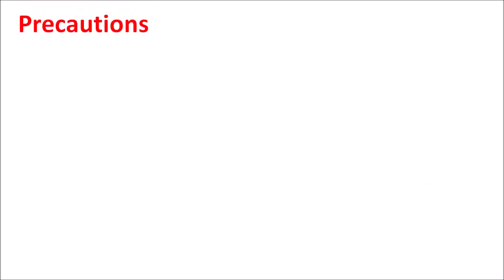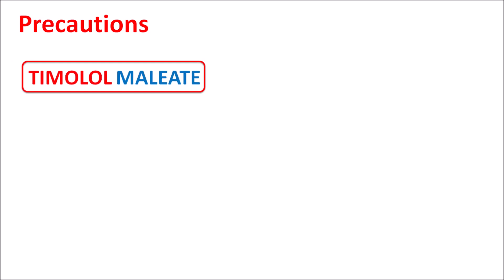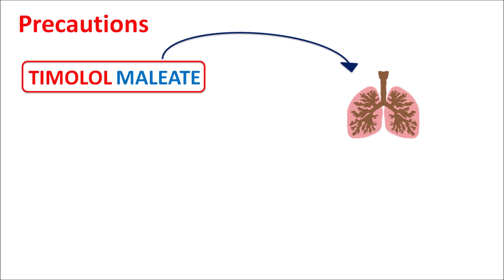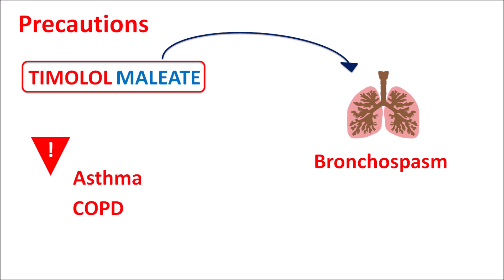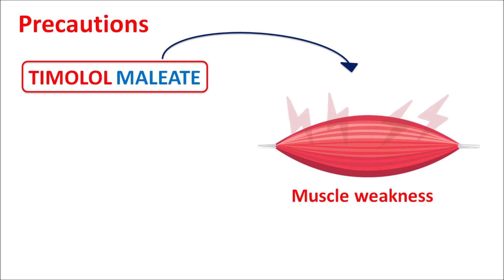An important precaution is that timolol maleate is a non-selective beta blocker, so it can act on other smooth muscles where beta-2 receptors are located. This drug can block beta-2 receptors on bronchial smooth muscle, resulting in bronchospasm. Therefore, this drug should be given carefully in patients with bronchospasm, and it is contraindicated in patients with asthma or COPD.